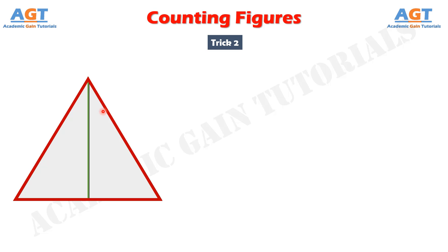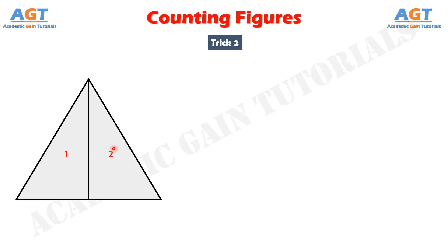There is an easy trick to find out these 3 triangles. First, serially number each of the internal triangles — this is triangle 1, this is triangle 2. Now add 1 and 2, so we get 3. That simply means the total number of triangles here is 3.